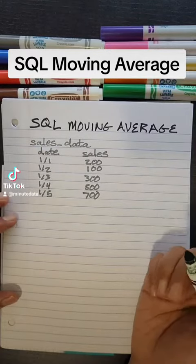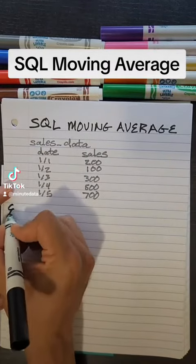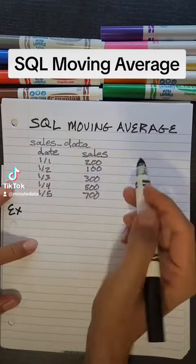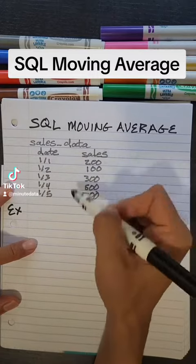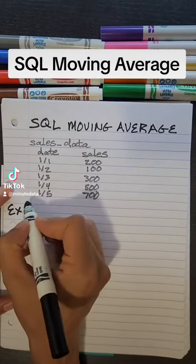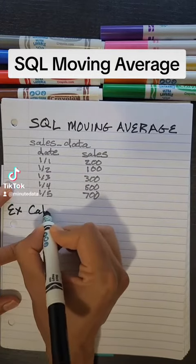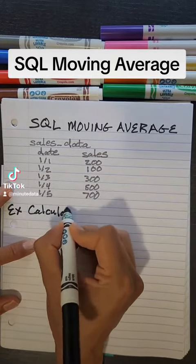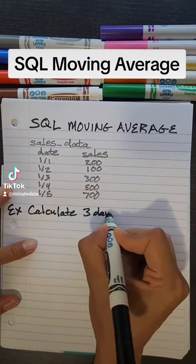Let's learn to calculate a moving average in SQL. We have some sales data — we have our date as well as the sales. In this example, we want to calculate a three-day average for sales.